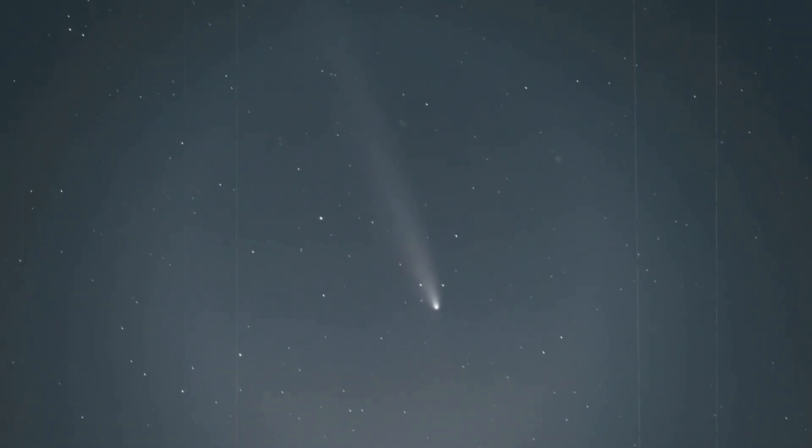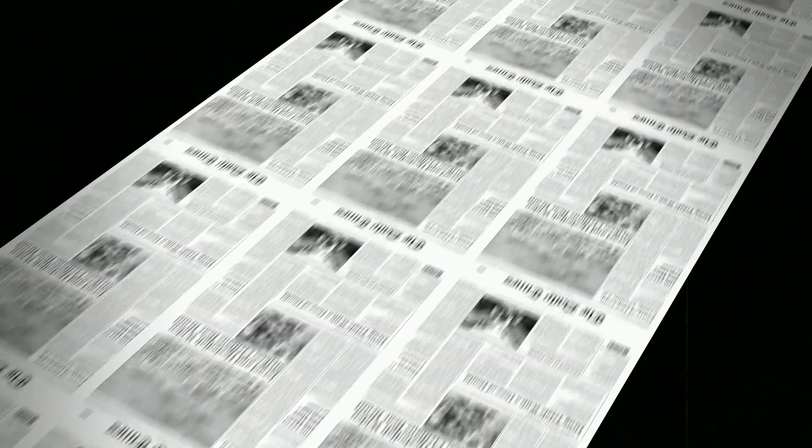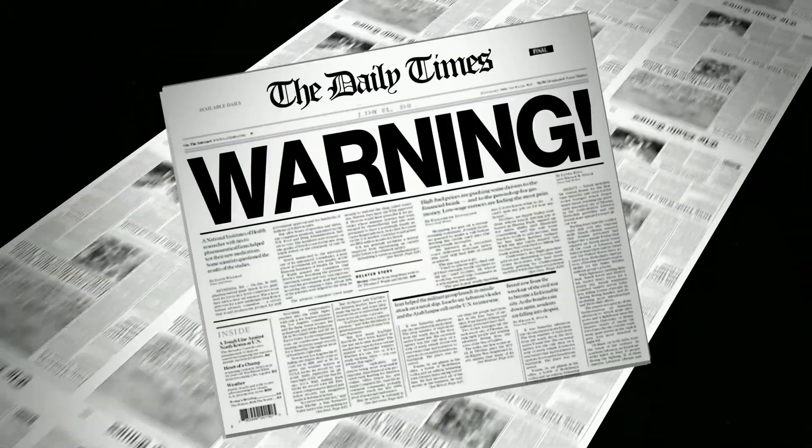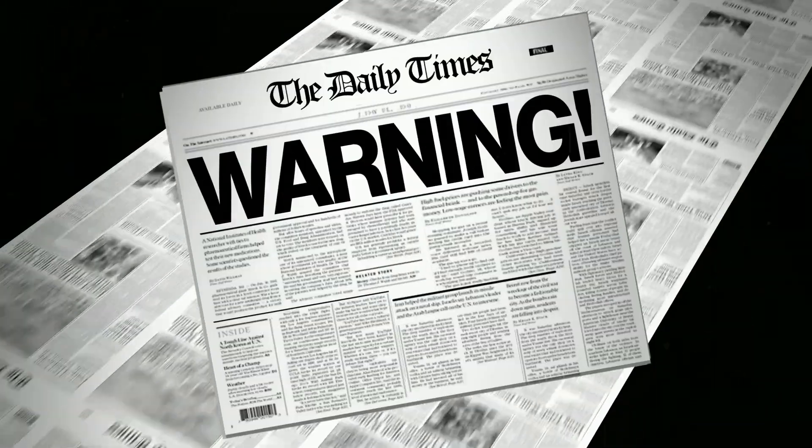In 1910, Halley's comet passed by Earth and sparked widespread fear as scientists of the time discovered traces of cyanogen gas in its tail. Newspapers printed sensational claims predicting catastrophe if Earth moved through it. The planet survived unscathed, but radio signals and atmospheric chemistry showed faint disturbances.